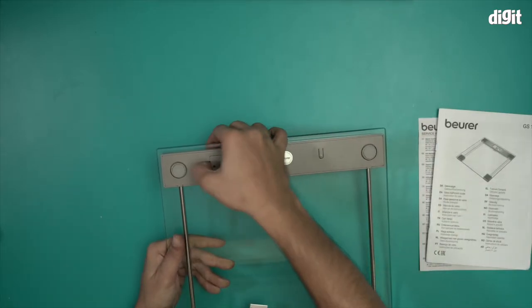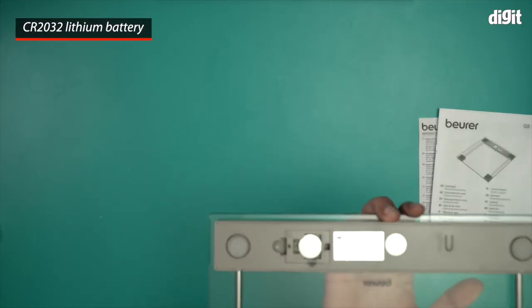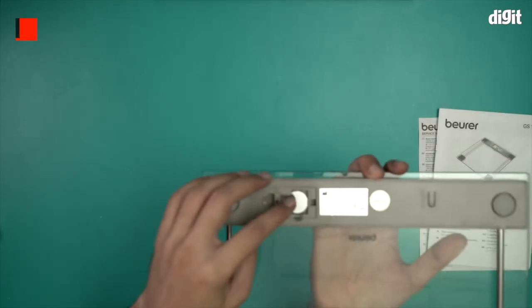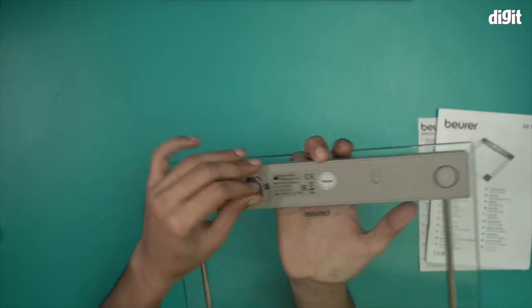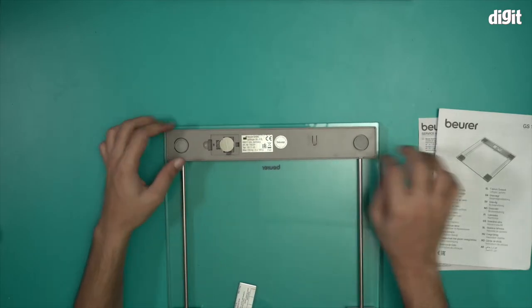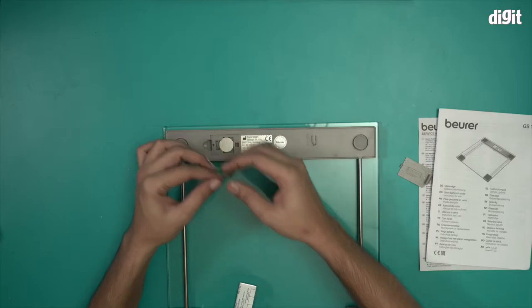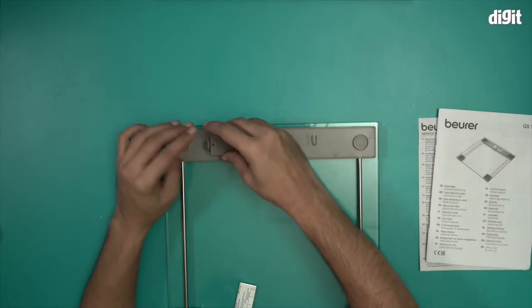There are batteries inside—a CR2032 battery is here with a thin filament. If I remove this, it will power the device on. Let me set it down and do this properly. There you go, this has been removed and it should be powered on by now.